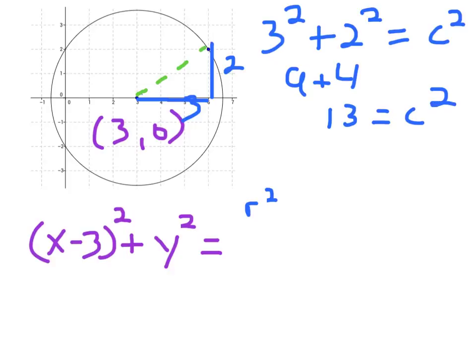Now, usually we take the square root of that and find c, and therefore we'd find the radius, but we don't want actually the radius. We want the radius squared, which we already have it. So that's our equation. (x minus 3) quantity squared plus y squared equals 13.